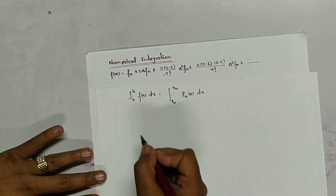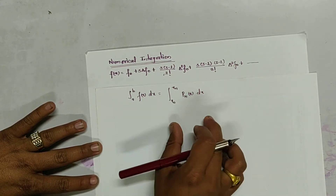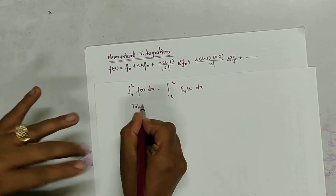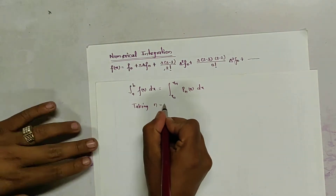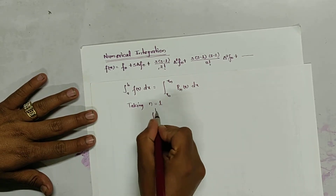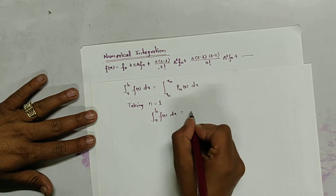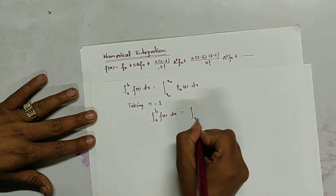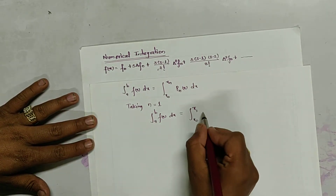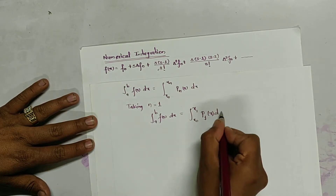Since integration is the sum of areas, it helps to calculate the area. Taking n equals to 1, the integral from a to b of f(x) dx becomes the integral from x0 to x1 of P1(x) dx.